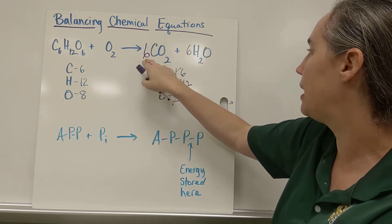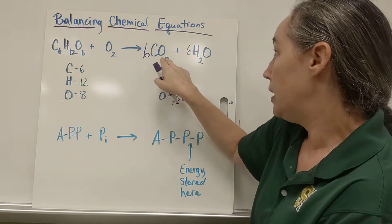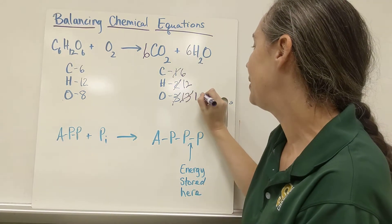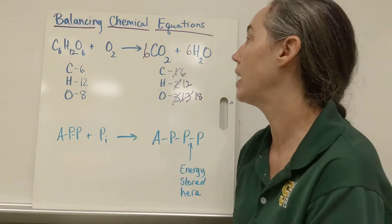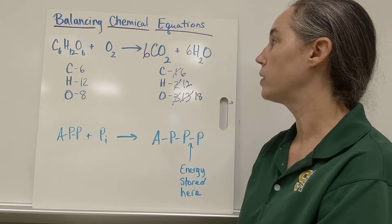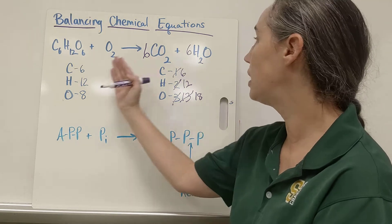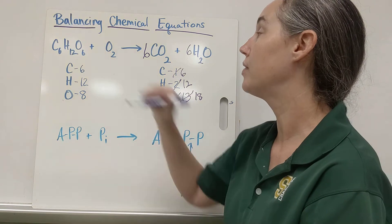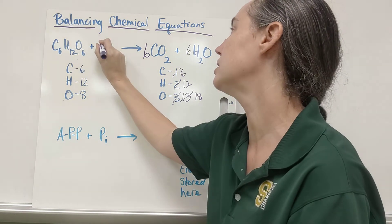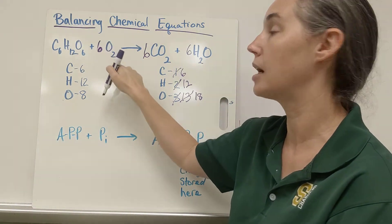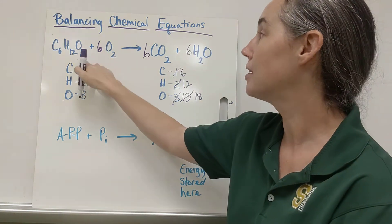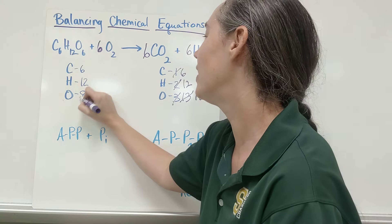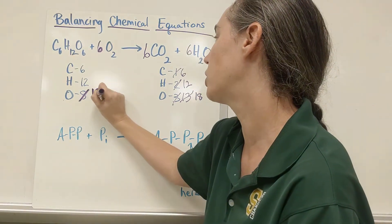On this side I have twelve plus six is eighteen, and on this side I only have eight. So what could I do? I could probably put something right here. If I put a six in front of this two, that makes six times two is twelve, plus this six, twelve plus six is eighteen. And now I have a balanced chemical equation.